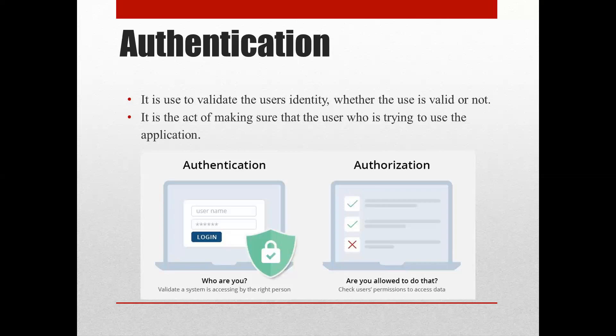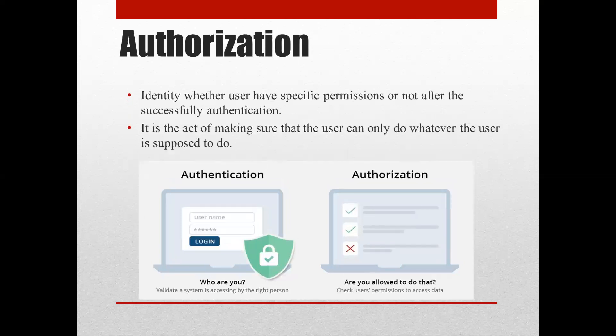Let's move to the next topic: authorization. Authorization is about providing permissions to the user who has logged into a particular application. There will be limited permissions for each user, and every user will have different permissions. It determines whether an identity has specific permissions after successful authentication. Once a user is authenticated — for example in Facebook — they will have some level of authorization, and this applies to any application.